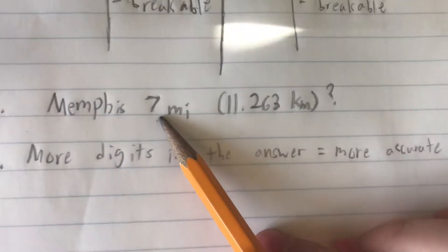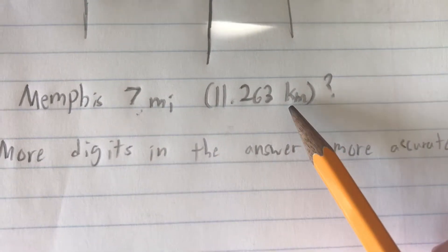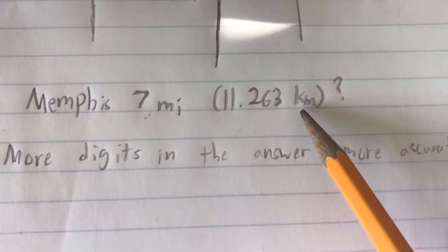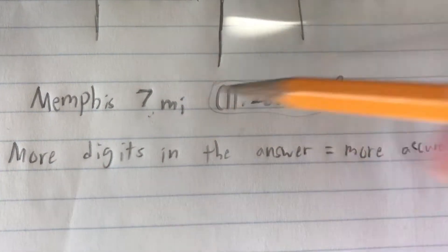The miles calculation we're given is to one significant figure, while the kilometers are given to five, meaning this measurement they give us here is significantly more precise than the last one.